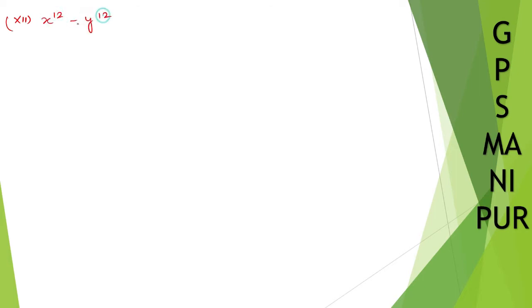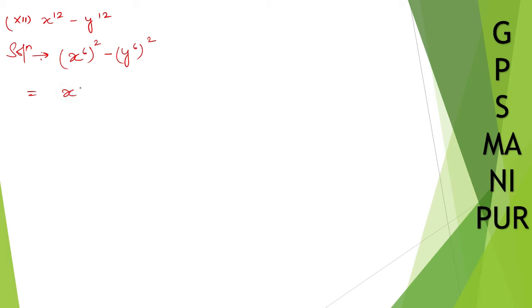Now we are doing exercise 2.3, question number 3, roman number 12. So for number 12, we have x to the power 12 minus y to the power 12. First, let me split it directly into x to the power 6 whole square minus y to the power 6 whole square. Since 6 times 2 is 12, I can write it this way. Then, using the identity a squared minus b squared equals a plus b times a minus b.